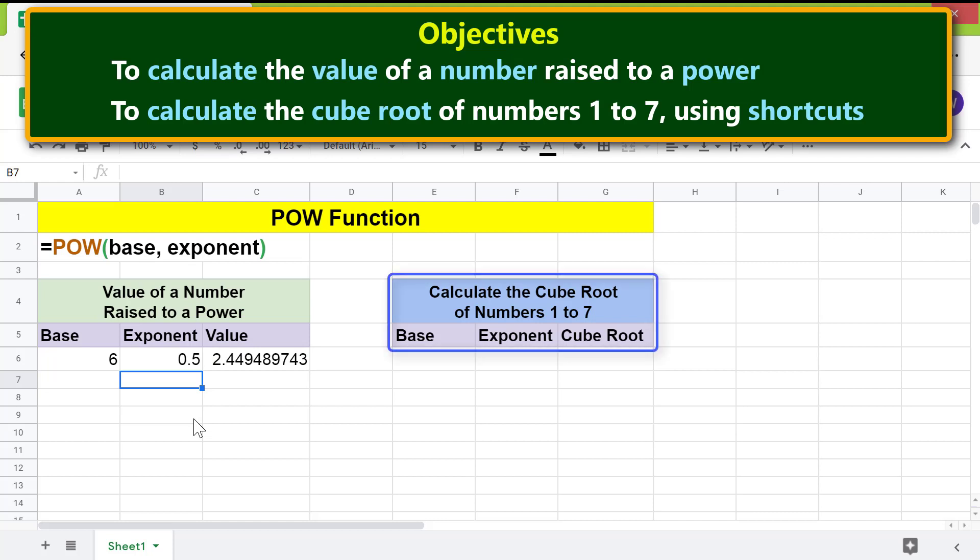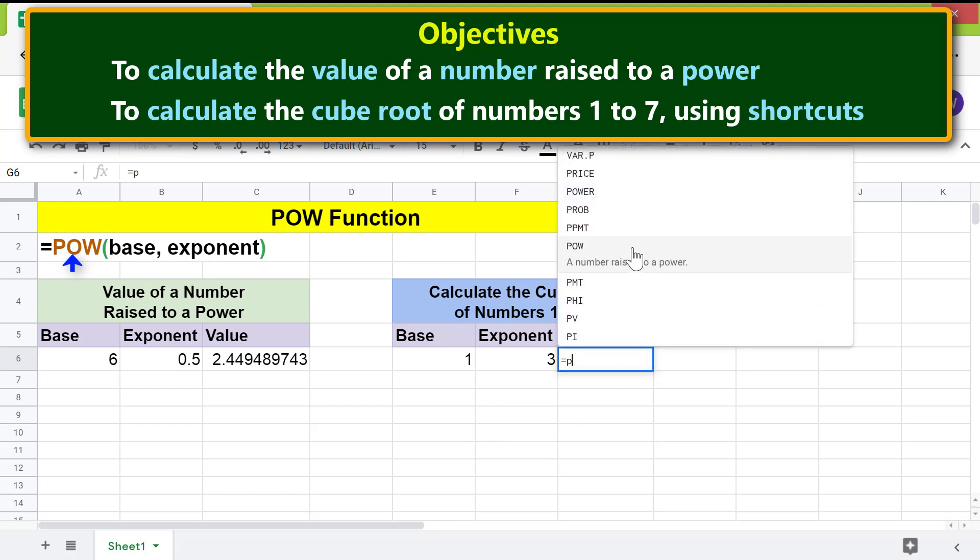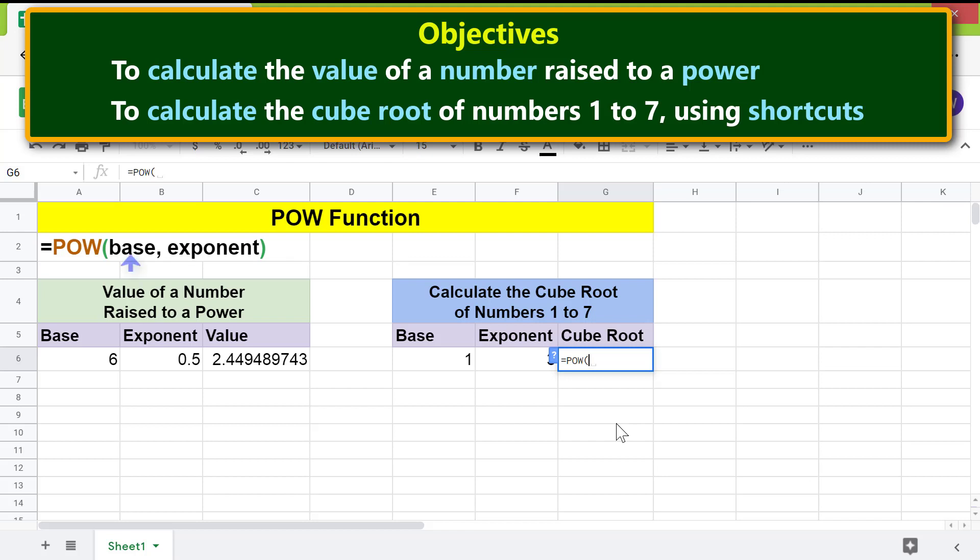Going forward, let's calculate the cube root of numbers 1 to 7 using shortcuts. For base, type 1, for exponent, type 3. Let's type the power function formula again. Type equal to P and select power. For base, click this cell, type comma, for exponent, click this cell, press enter.